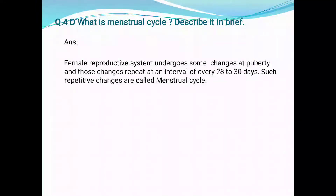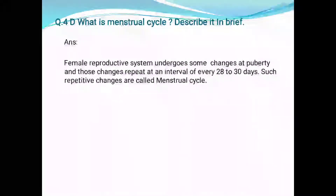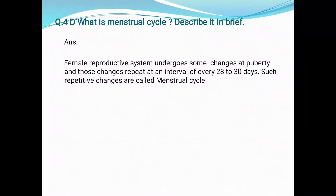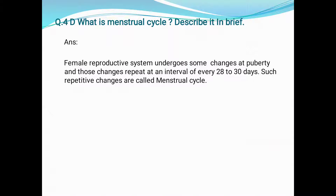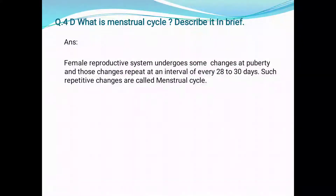Starting with the definition: the female reproductive system undergoes some changes at puberty, and those changes repeat at an interval of every 28 to 30 days. Such repetitive changes are called the menstrual cycle.